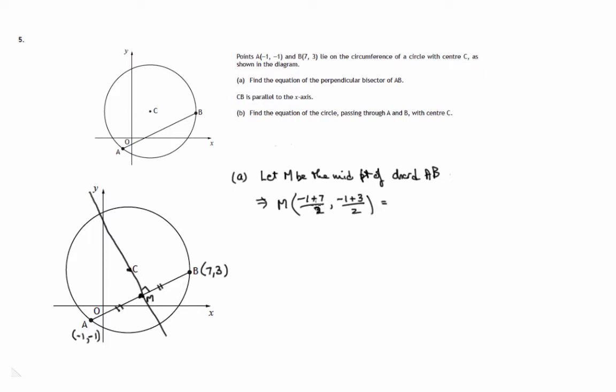And negative 1 plus 7 is 6. 6 divided by 2 is 3. Negative 1 plus 3 is 2. 2 divided by 2 is 1. So this point, let's add it to the diagram, is 3, 1.